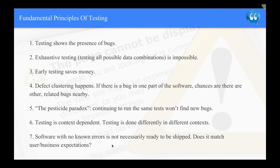What are the fundamental principles of testing? Number one: testing shows the presence of bugs — hence the need for testing. Number two: exhaustive testing is impossible — testing all combinations is endless and time-consuming. Number three: early testing saves money — the earlier you can get on testing, the better. Number four: defect clustering happens — if there is a bug in one part of the software, chances are there are related bugs nearby. So if you find one bug, look around for others next to it.